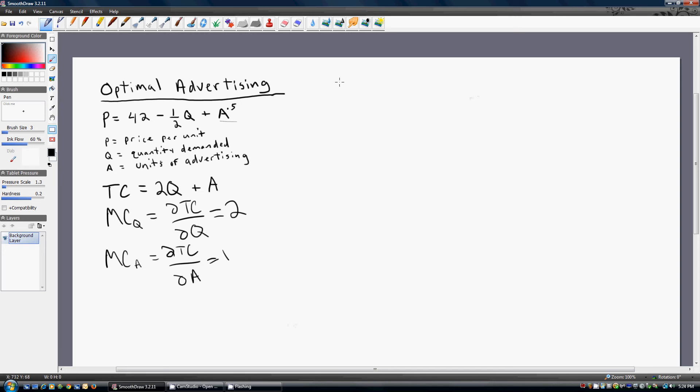The next thing we do is to get marginal revenue, and we get marginal revenue from total revenue. Just writing total revenue as price times quantity allows us then to make a substitution of this inverse demand equation in for P.